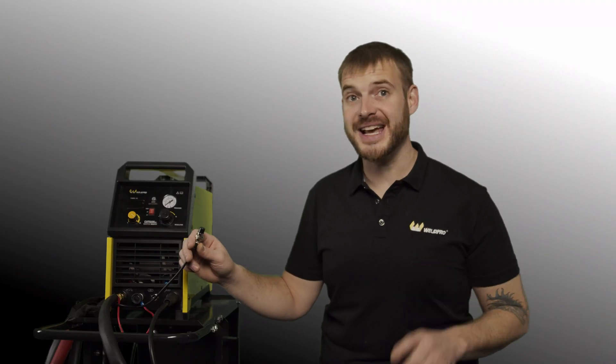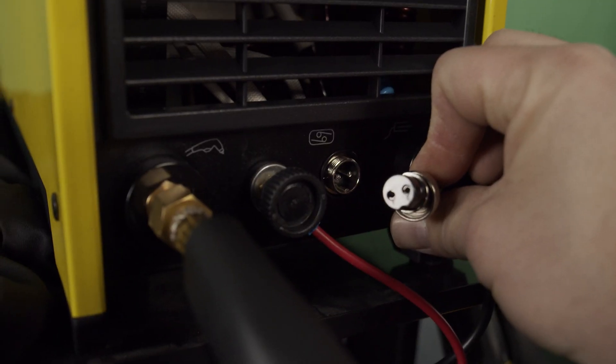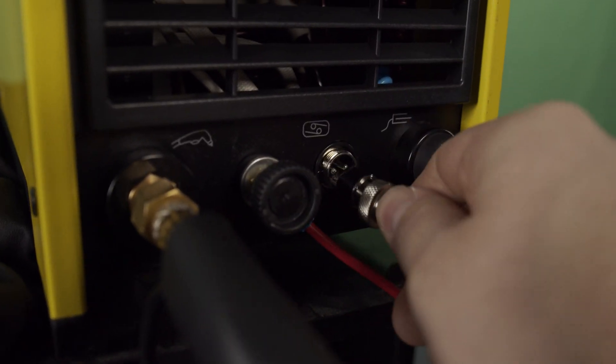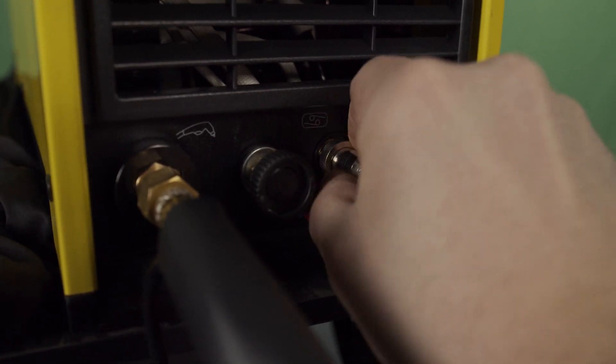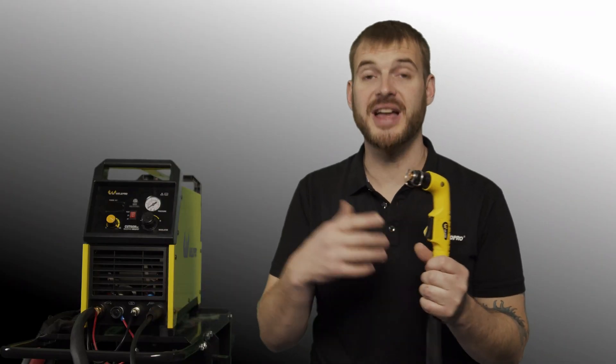The last step to get this torch fully connected is to hook up this two pin Anthenol connector to the front of the machine. You do this by inserting the connector and tightening the metal ring clockwise. That connector we just hooked up is the trigger switch connector and that sends a signal to the machine letting it know that you've squeezed the trigger and that you're ready to cut.